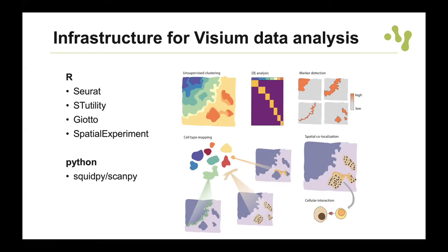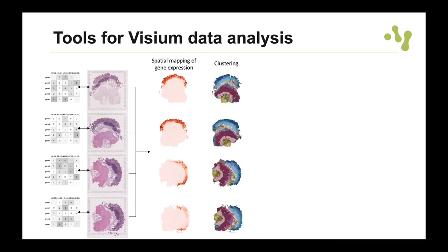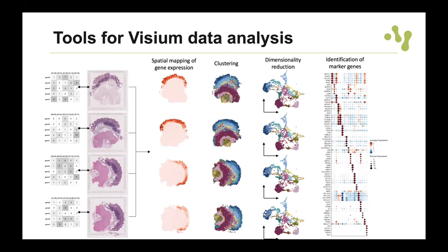Just to give an idea of what you can do with these tools: starting with four tissue sections, you have H&E images and corresponding expression matrices. You can load them together and process everything at once — visualize marker genes, do unsupervised clustering, dimensionality reduction, and differential expression analysis. A lot of the things you can do for single cell RNA-seq analysis you can also do for Visium analysis, but it's important to keep in mind you're looking at mixtures of cells, not single cells.